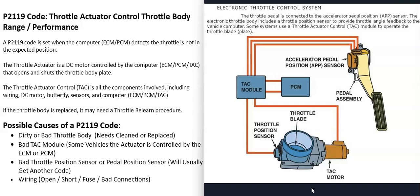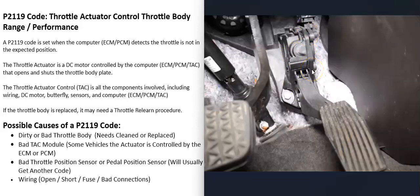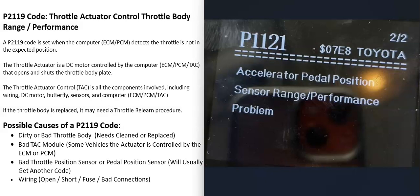Another cause is a bad throttle position sensor or a bad pedal position sensor located at the gas pedal. If one of these sensors goes bad it can throw everything off and cause this P2119 code. Usually if that happens you'll get another accompanying code — for example, a P1121 accelerator pedal position sensor range/performance problem. If you get that code too, do some tests to confirm the pedal position sensor is working correctly.